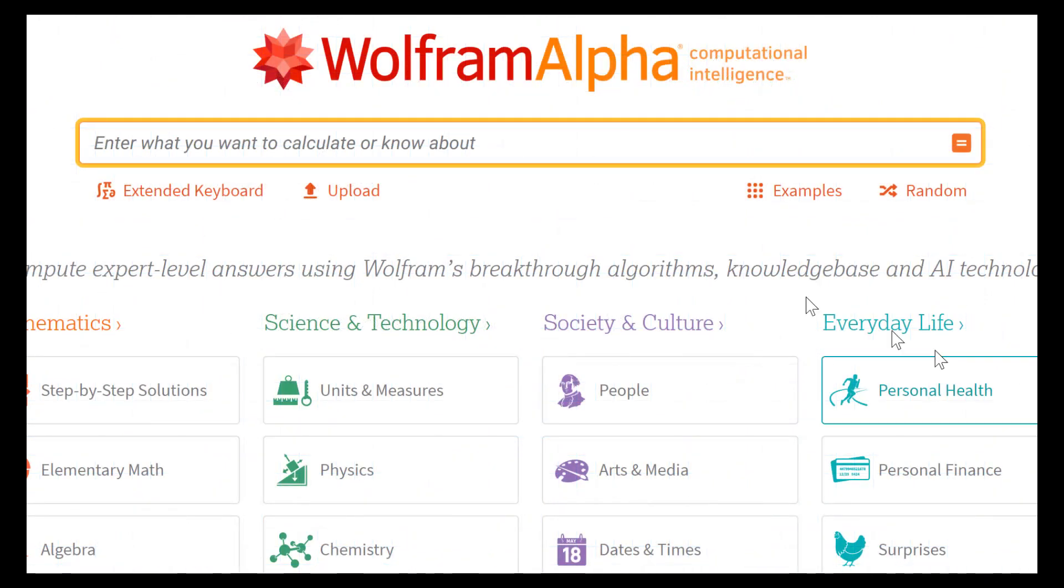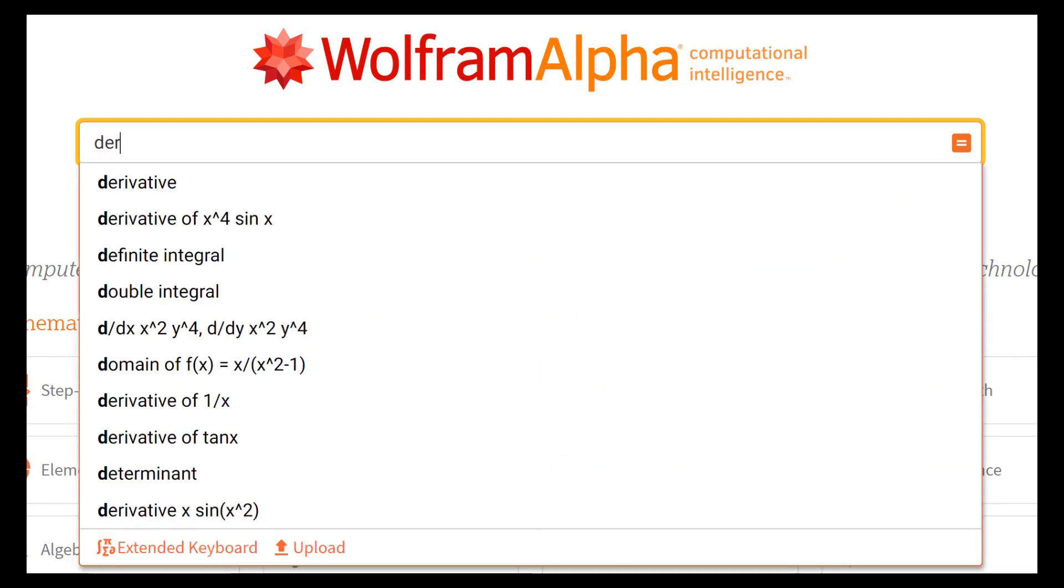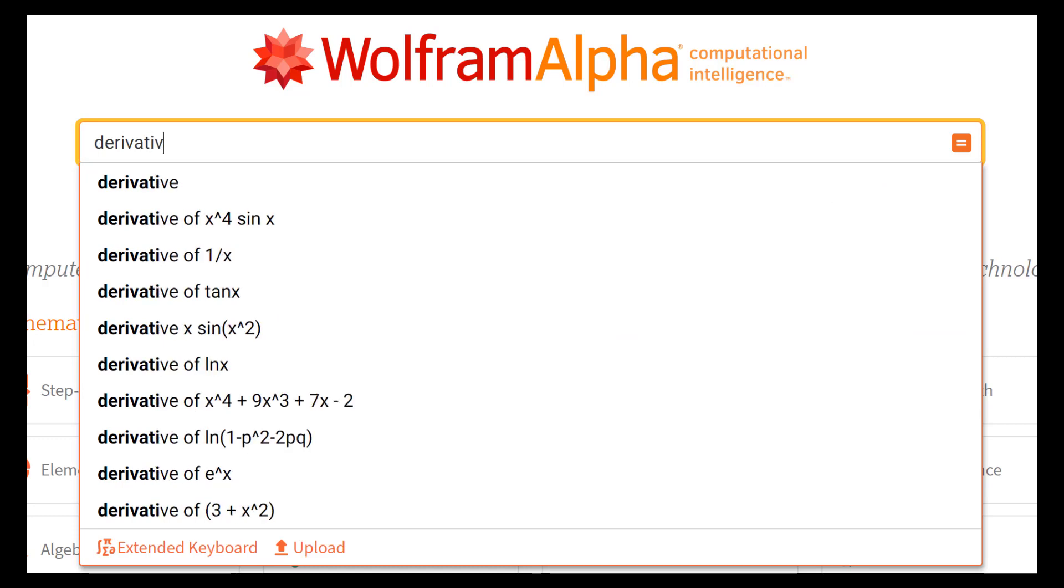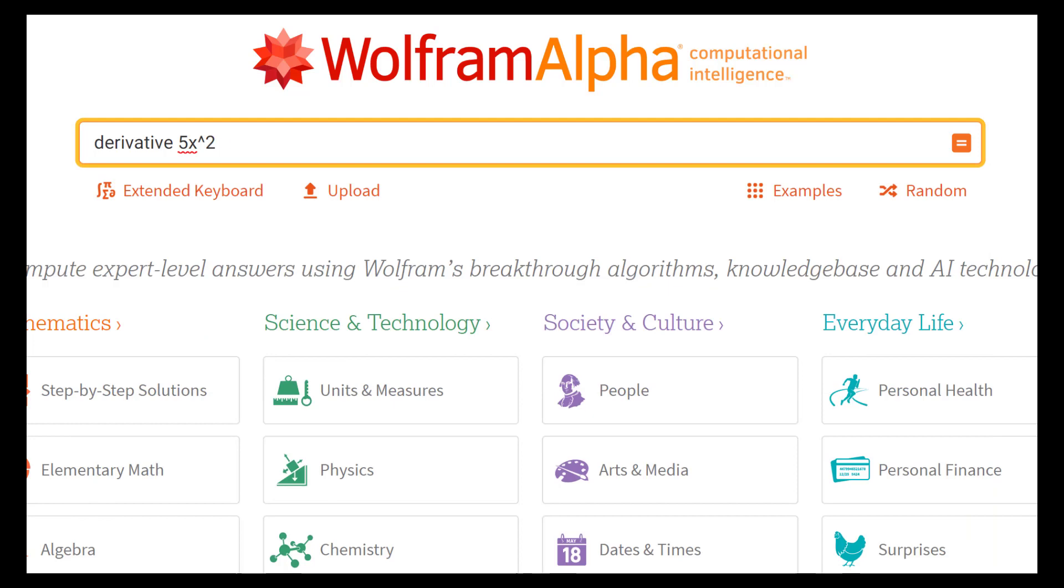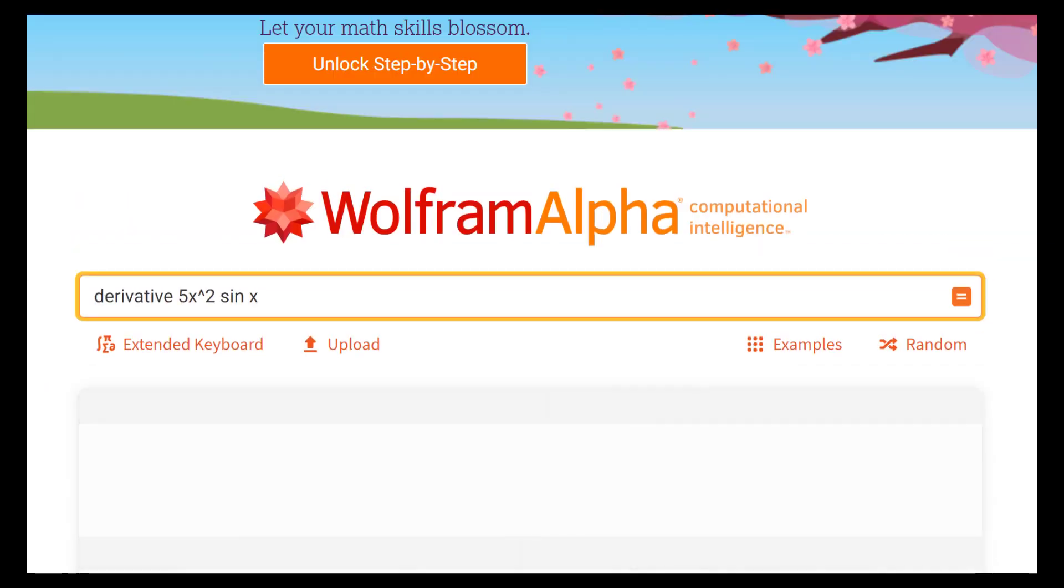Here I'm at wolframalpha.com, and I want to check my answer really quick. What I'll do is type in 'derivative of 5x² times sin(x)' and then hit enter and see what it gives me.